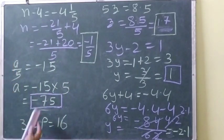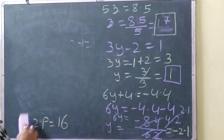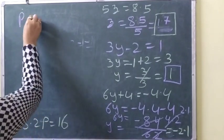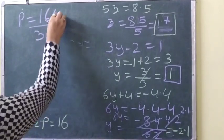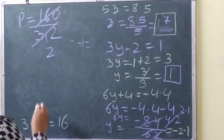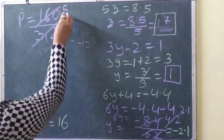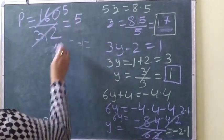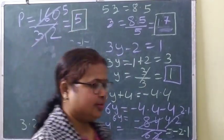Now for 3.2p equals 16: p equals 16 divided by 3.2. We can multiply: 16 by 10 over 32, which gives 5. So the answer is 5. We have done so many questions here and all of them are quite easy.